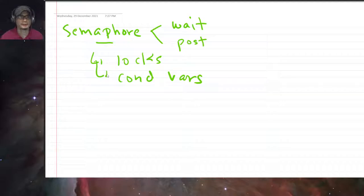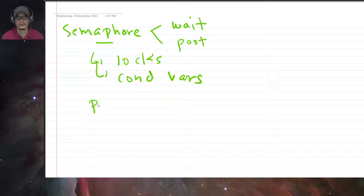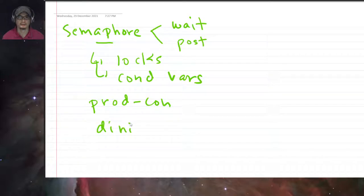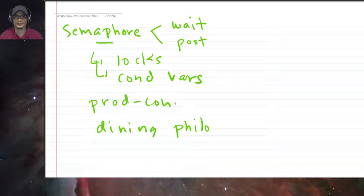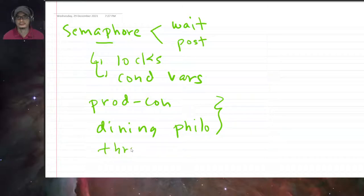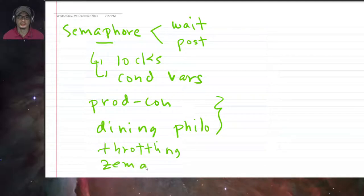In the previous chapter we also talked about some of the classic synchronization problems like the producer-consumer problem and the dining philosophers problem. We used the semaphore to solve these problems. We also talked about thread throttling and the implementation of semaphores.